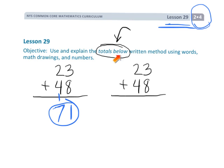Now with this totals below method, what we're going to do is add our units together and just record them below. For example, we have three ones plus eight ones — that gives us eleven ones — so I'm going to record eleven ones. And then we've got two tens plus four tens — that gives us six tens, so that's sixty — and I'm going to record sixty right here.